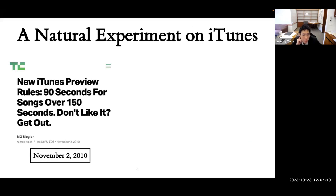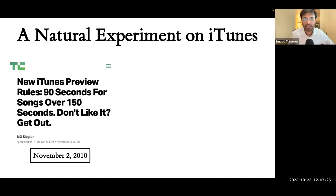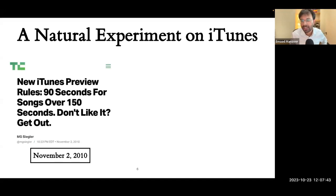A panelist asks: for the excerpts on iTunes, is it just playing from the beginning and cutting off after 30 or 90 seconds, or can musicians decide what to include? Technically, musicians can decide. But practically as an artist, you have very little control over how your music is sold — you have to delegate that to your distributor or label. You can start the excerpt wherever you want if your label lets you do that.